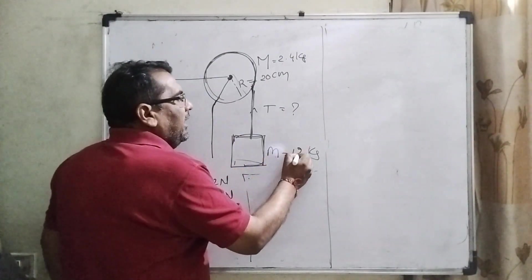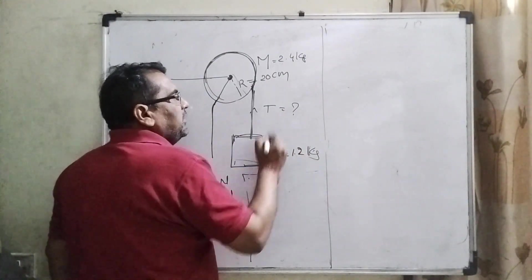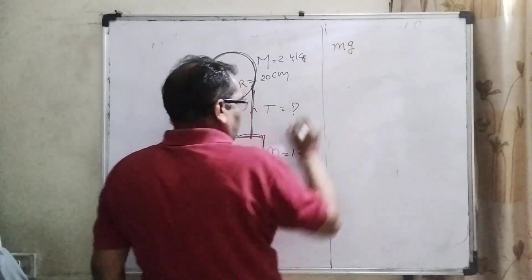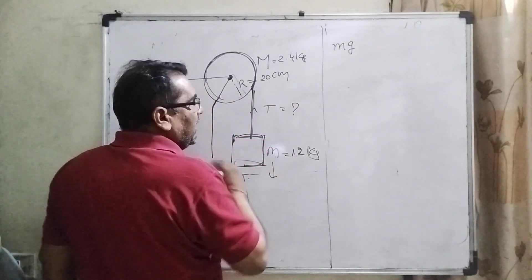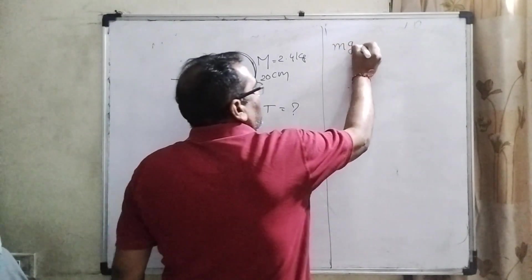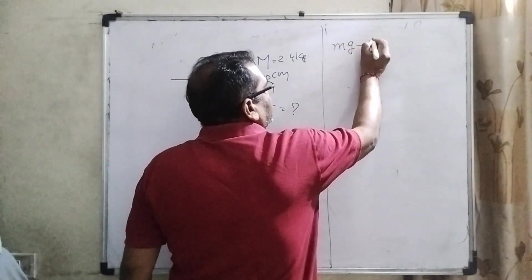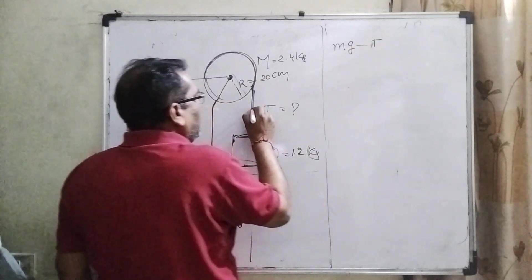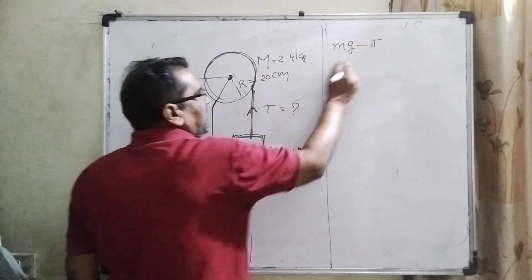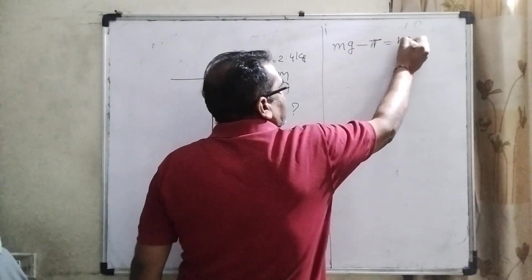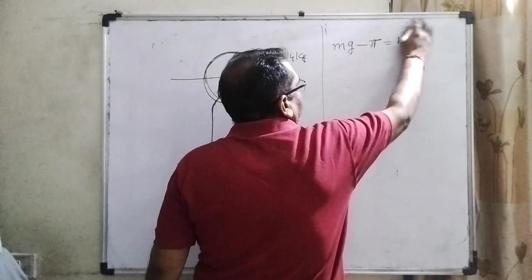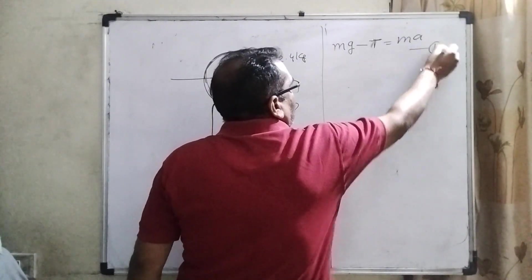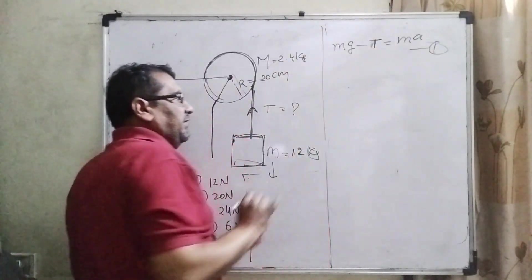As we know, Mg acting downward direction minus tension T acting upward direction gives the resultant Ma. This is equation number one: mg − T = ma.